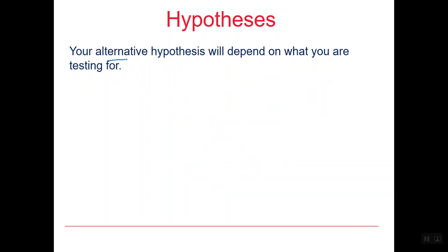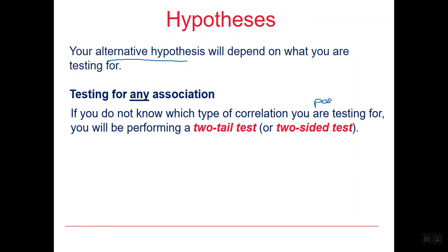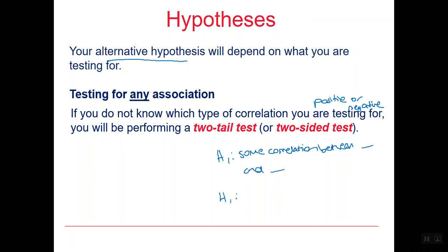We also need to have an alternative hypothesis, and this depends on what we are testing for. If we are testing for any association, we could be performing a two-tailed test — meaning the correlation could be either positive or negative; we don't know which. So we would write that H1 is that there is some correlation between the two variables, or using rho, that rho is not equal to zero.